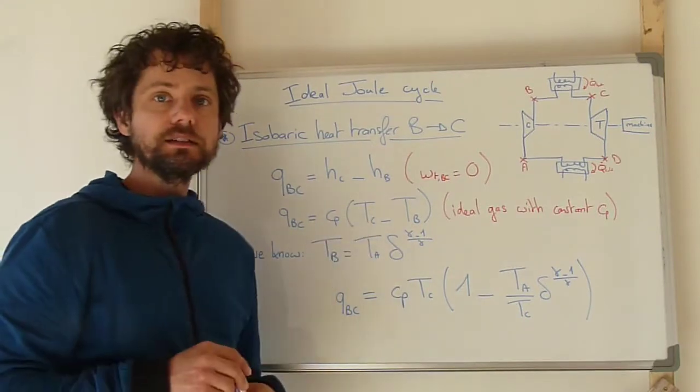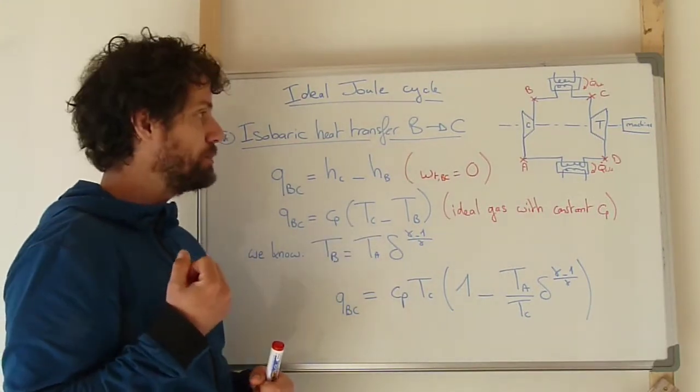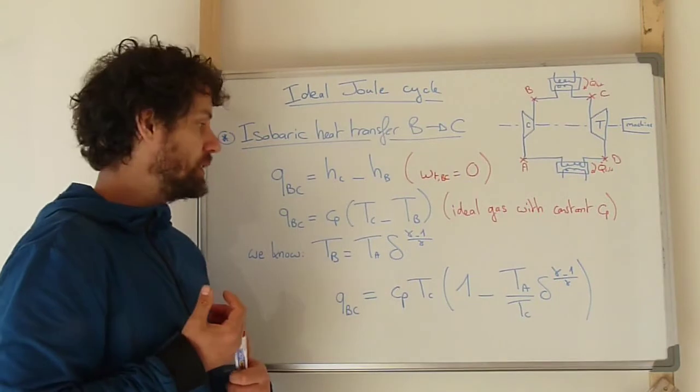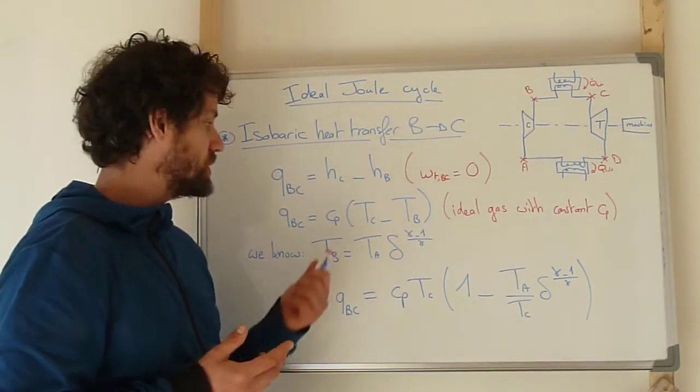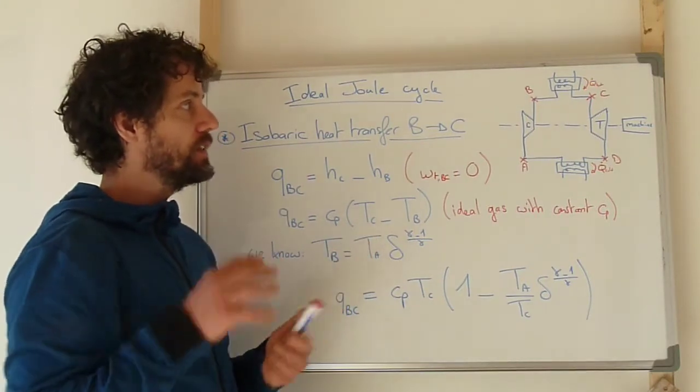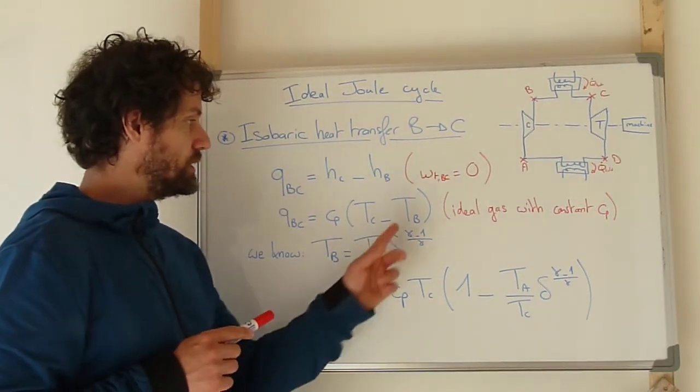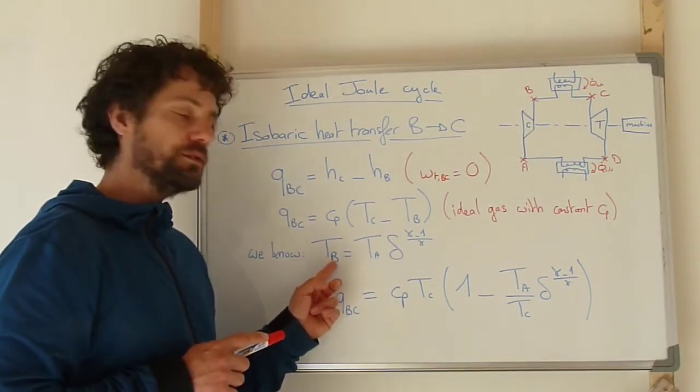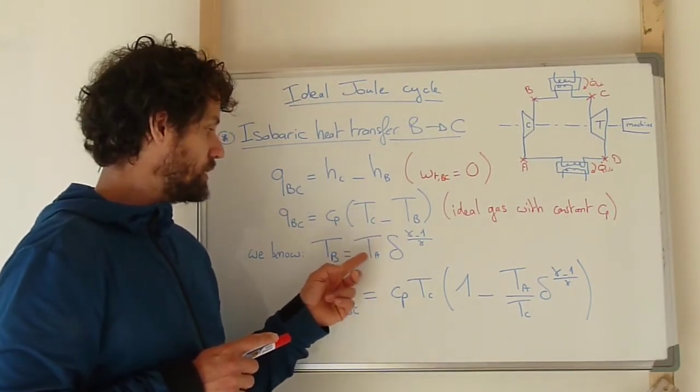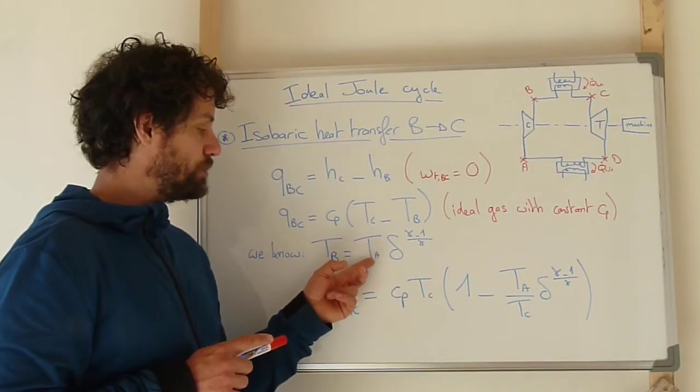Tc is an input parameter because it's usually defined as the maximum temperature which can be admitted at the inlet of the turbine. And Tb was already expressed before as a function of input parameters with the inlet temperature in A and the ratio of compression delta and the isentropic coefficient.